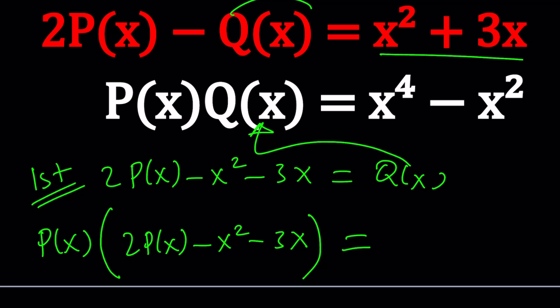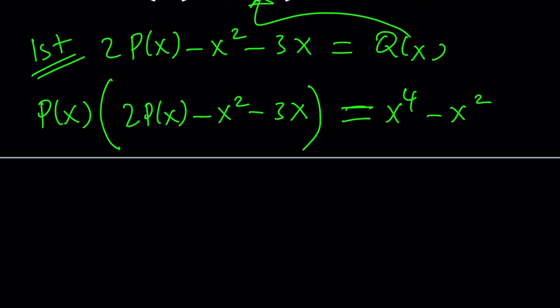notice that we only have P(x) as our variable. What about x, right? Okay, don't worry about it for now. Let's go ahead and simplify this. The right-hand side is just going to be x to the fourth minus x squared. Now as you can see here, this turns into a quadratic equation in P(x).